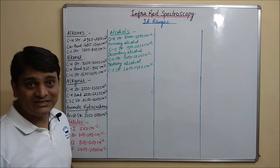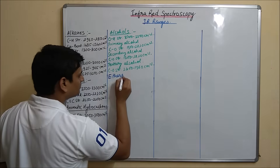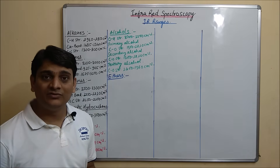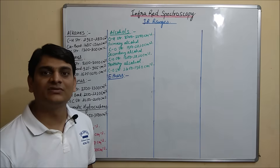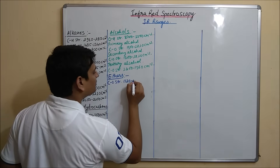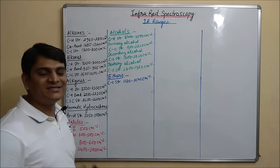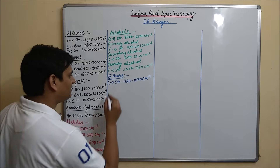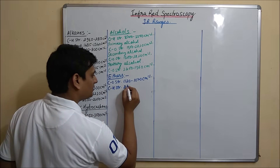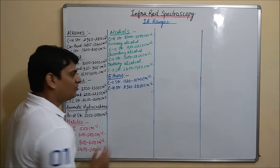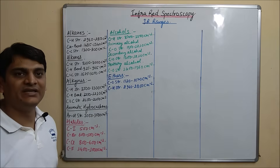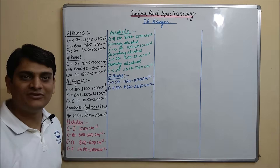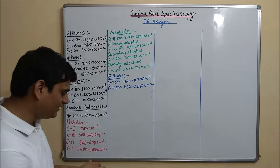Now coming to the IR ranges for Ethers. In Ethers, CO stretching is 1120 to 1070 cm inverse. And the CH stretching is 2940 to 2850 cm inverse. Now coming to Aldehyde — for Aldehyde, C double bond O stretching is 1740 to 1720 cm inverse.